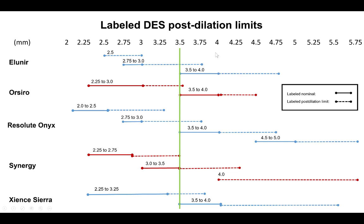For example, if the distal main vessel is 3 mm but the proximal is 4 mm, then using a 3.0 mm stent means we could not expand it to 4 mm. One solution is to use a Synergy stent that can go up to 4.0 mm. Another option would be to use a slightly larger stent such as a 3.5 mm, deployed at low pressure and then post-dilated to a larger diameter.